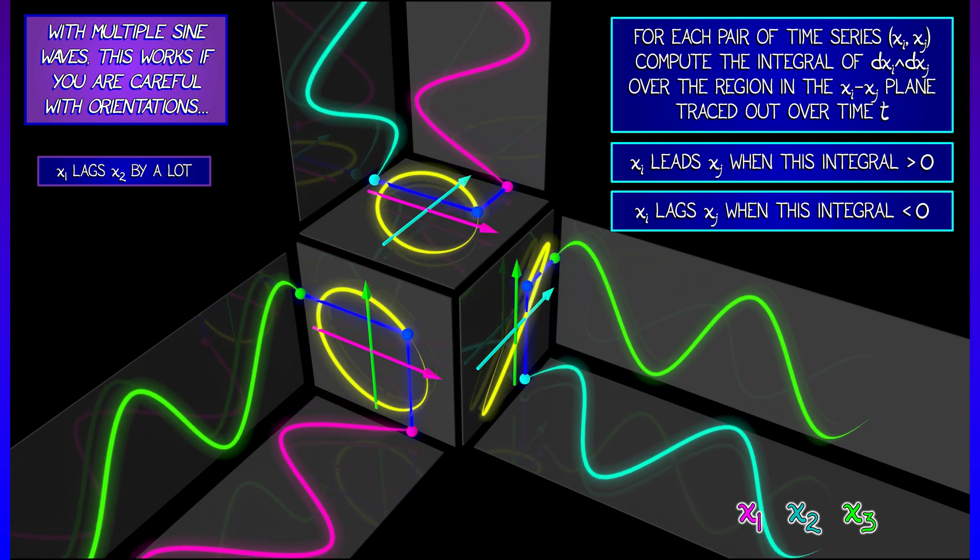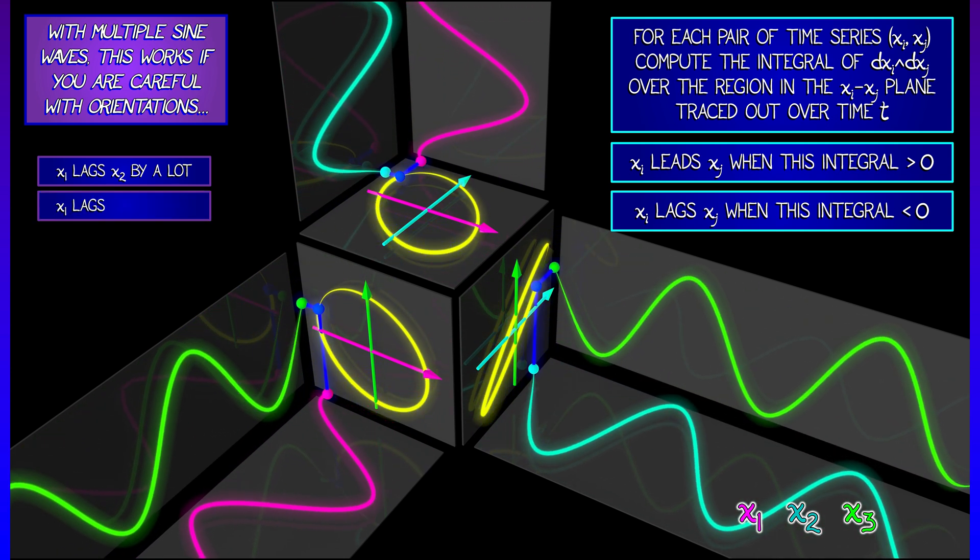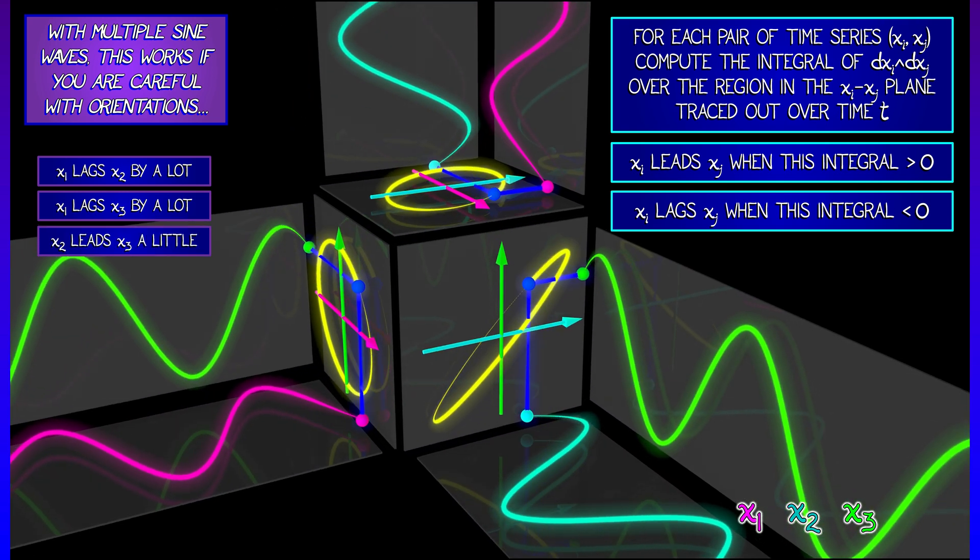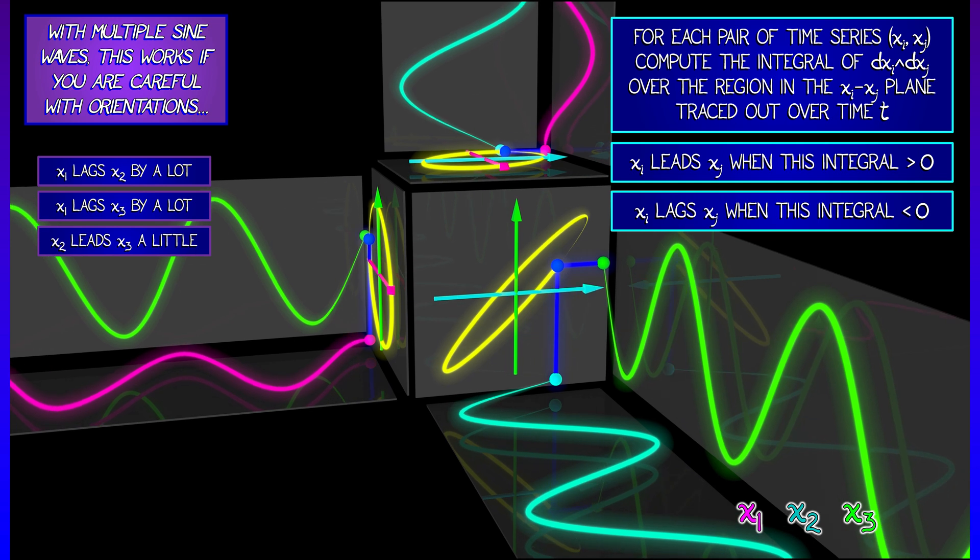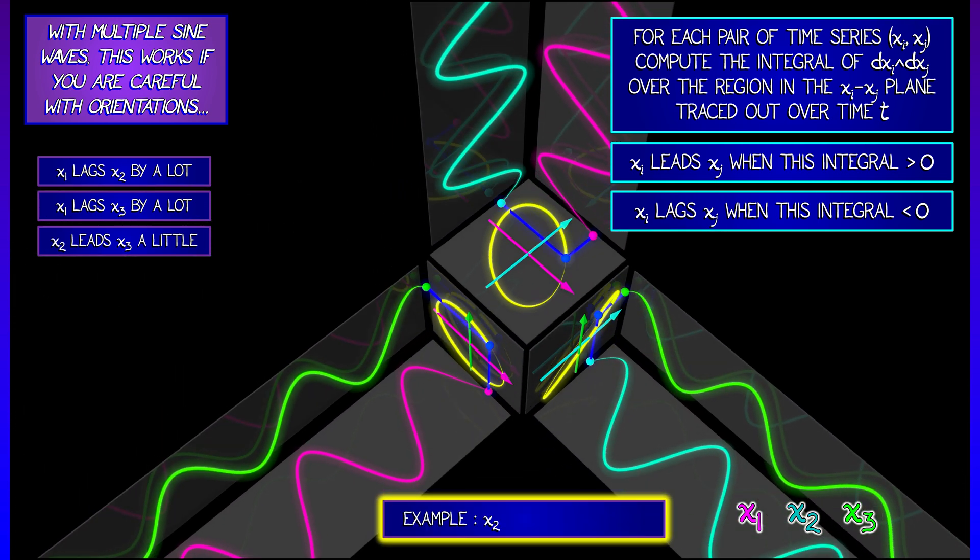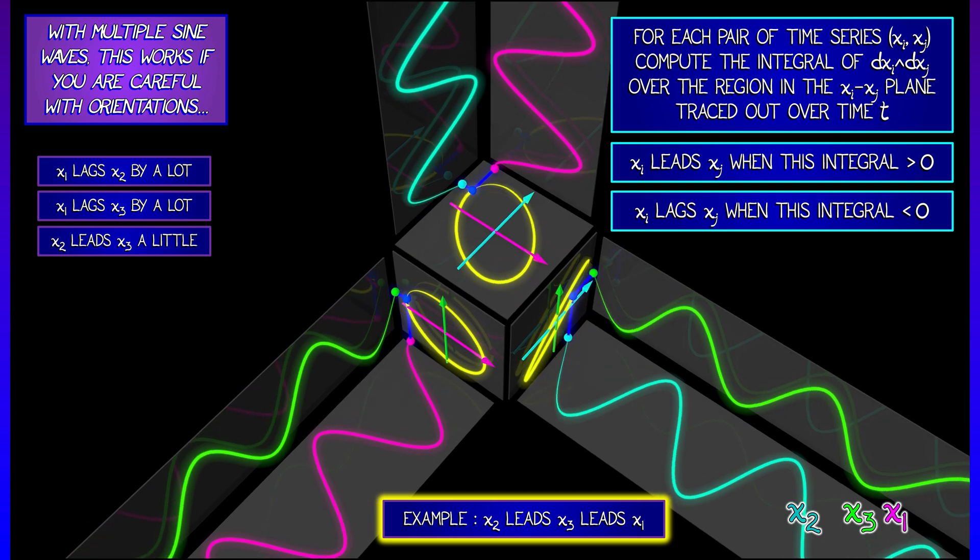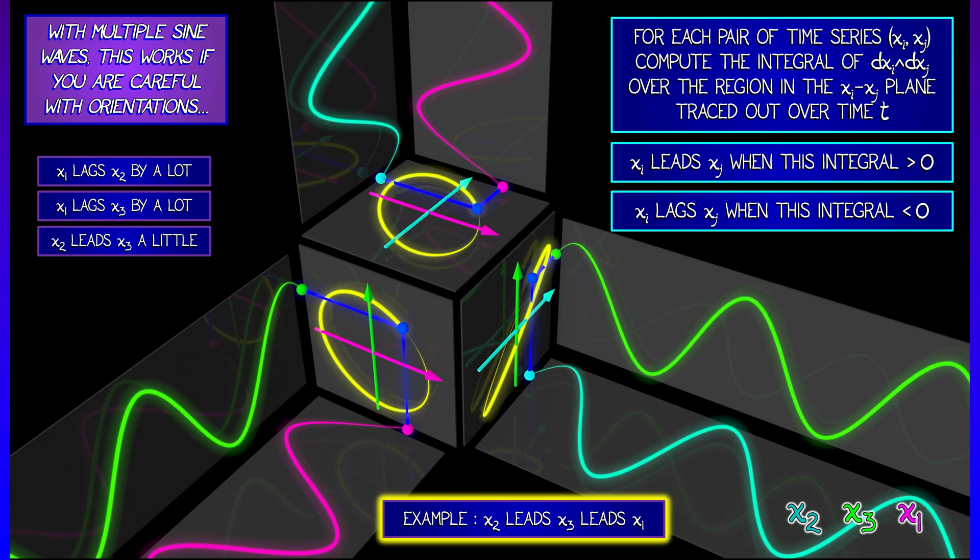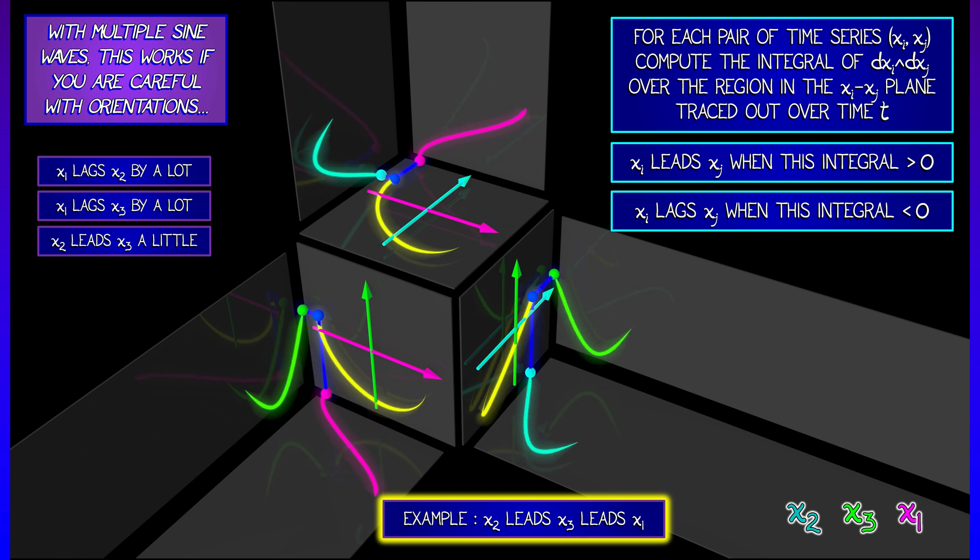So in the example that we see here, x1 lags x2 by a lot, x1 lags x3 by a lot, but x2 leads x3 by just a little bit. Computing those three integrals, looking at those three oriented areas, helps us figure out the exact order: x2, x3, x1.